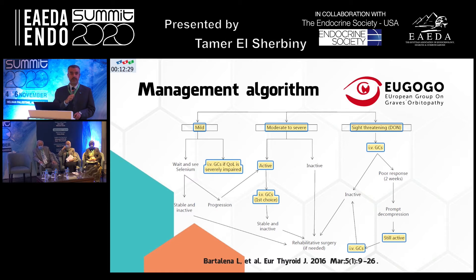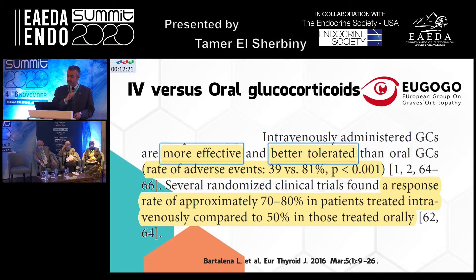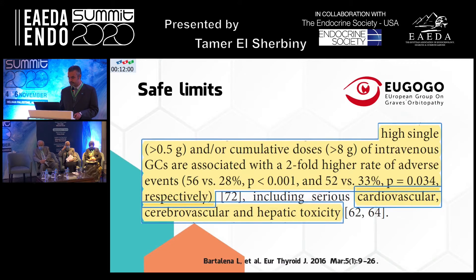If the patient is still active, we give IV glucocorticoids. The guideline insists on IV glucocorticoids because they are more effective than oral — effective in 80% versus only 50% for oral — and better tolerated, with adverse effects in only 40% versus 80% for oral. So IV is both more safe and more effective. A high single dose of more than 0.5 grams of methylprednisolone, or a cumulative dose of more than 8 grams of methylprednisolone, doubles the risk of adverse events, including cardiovascular, cerebrovascular, and hepatic side effects.